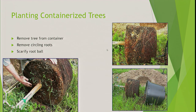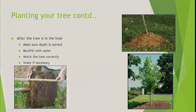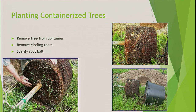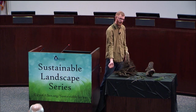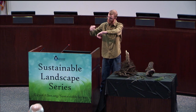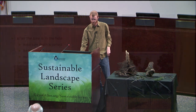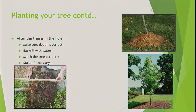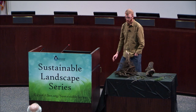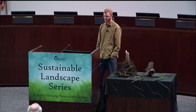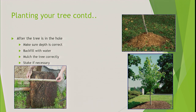For containerized trees: remove the tree from the container, remove circling roots, rough up the root ball well. When planting, I dig the hole and lay a shovel across it, measuring the height from about two inches above the flare to the bottom of the root ball, ensuring the correct depth. Backfill about halfway with soil, heel it in, then water thoroughly — give it a good two to three minute soak. The water will fill pore spaces; if you completely backfill before watering, the tree could sink. Be sure you're watering while you're planting.